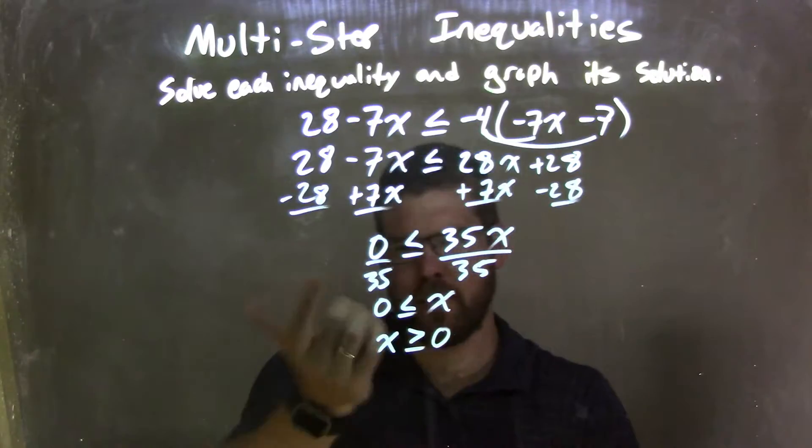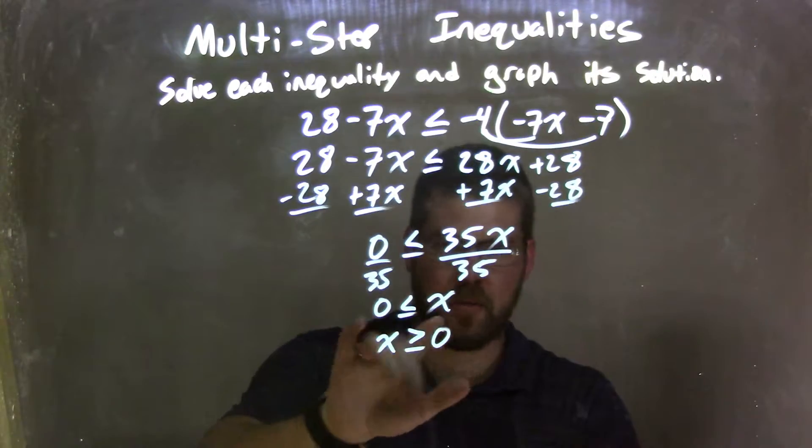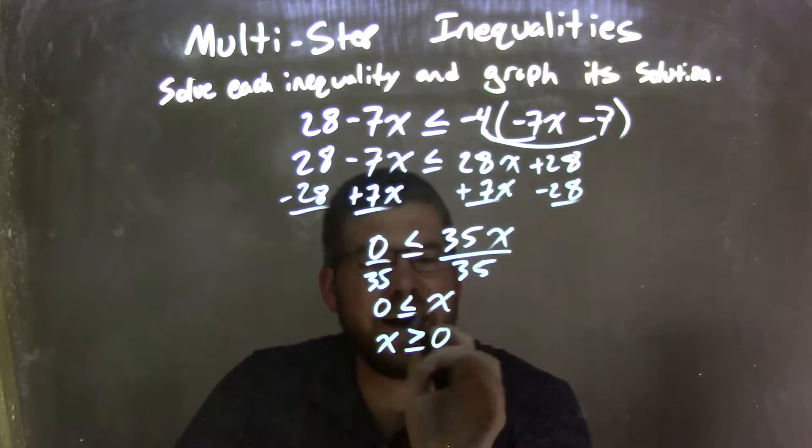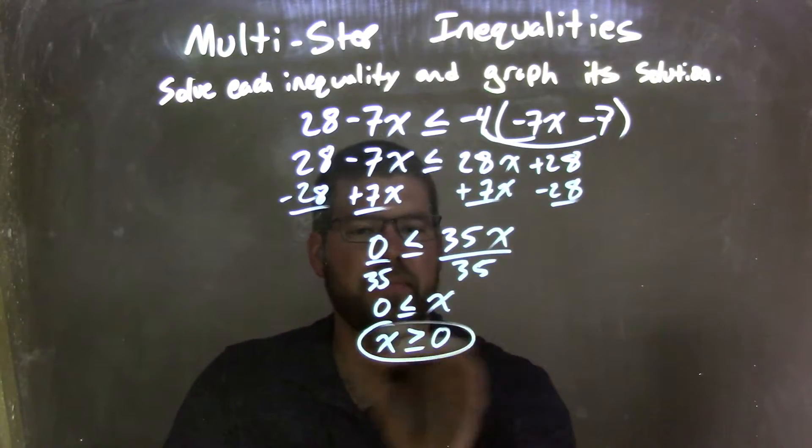Make sure you flip the inequality if you rearrange the whole equation or inequality, having x going first. So now, instead of 0 is less than or equal to x, we have x is greater than or equal to 0. And there we have it.